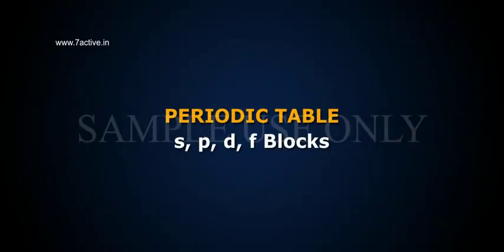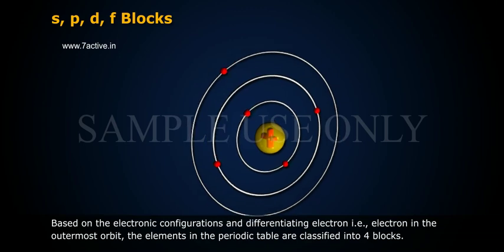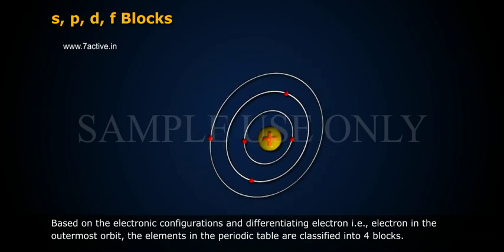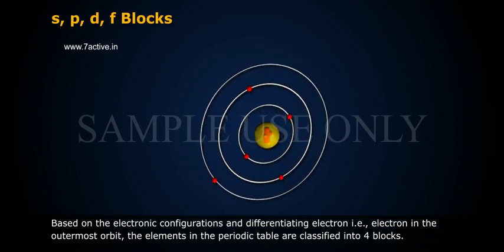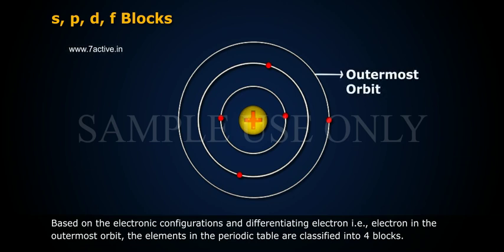Periodic Table: SPDF Blocks. Introduction. Based on the electronic configurations and differentiating electron, that is, the electron in the outermost orbit, the elements in the periodic table are classified into four blocks.